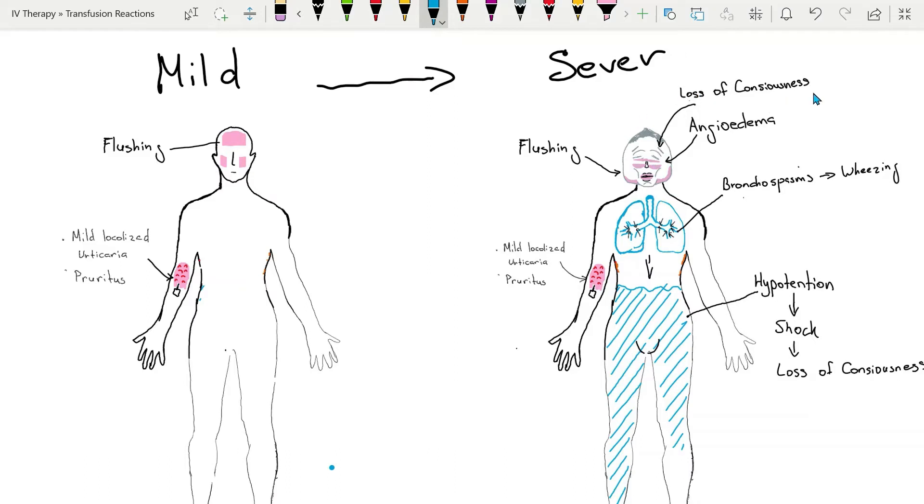Signs and symptoms of allergic reactions in their mild form are itching, hives, urticaria, and angioedema which is swelling around the eyes and lips. In severe form: anxiety, bronchospasm, wheezing, hypotension, shock, and even loss of consciousness.